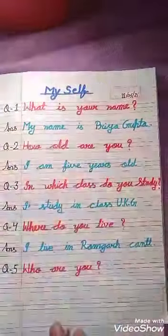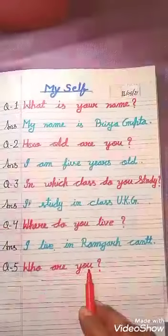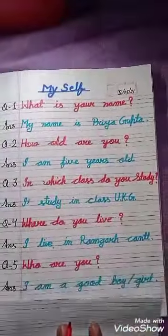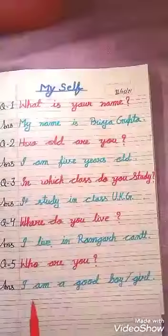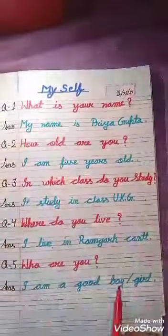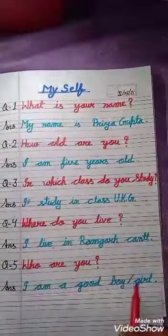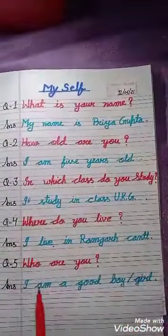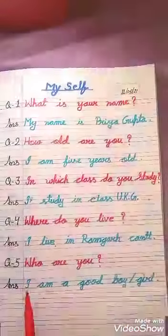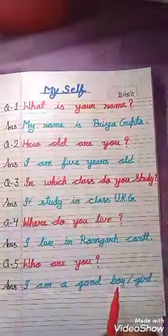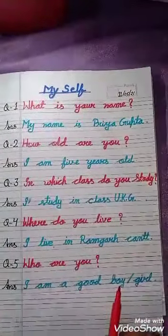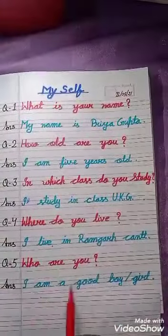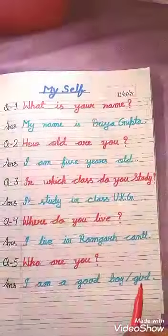Question number five: Who are you? (Tumh khaan ho?) Answer: I am a good boy or girl. If you are a boy, then you write — I am a good boy. If you are a girl, then you write — I am a good girl.